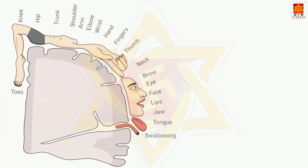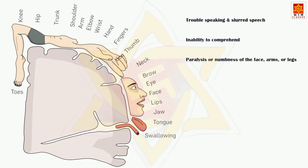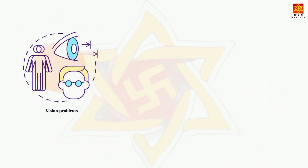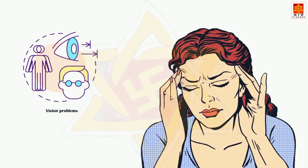Signs and symptoms of a stroke depend on which part of the brain is affected. Important signs and symptoms include speaking difficulties and slurred speech, inability to understand what others say, also known as inability to comprehend, paralysis or numbness of the face, arms, or legs — this often affects just one side of the body, and one side of the mouth may droop when the patient is trying to smile. Vision problems such as blurred vision and double vision may also occur. Moreover, many patients experience a sudden, severe headache which may be accompanied by vomiting, dizziness, and altered consciousness.